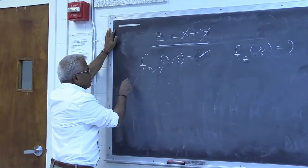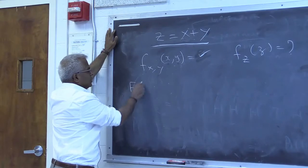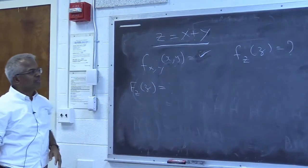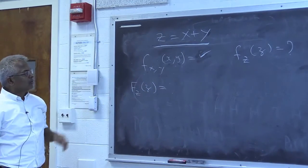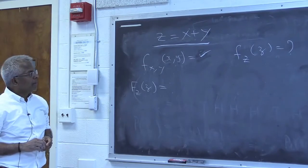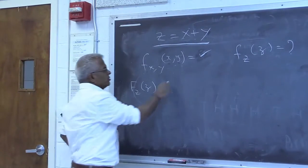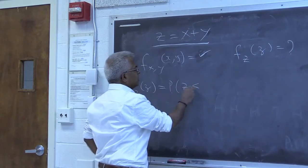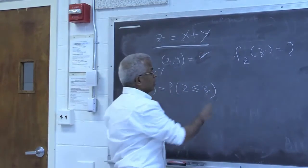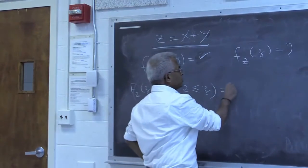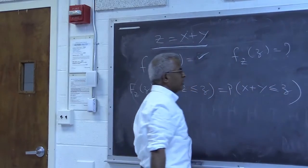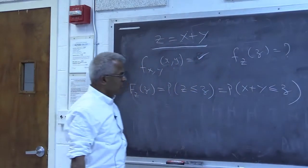To start with, it is generally more natural to begin with the distribution function of Z. The distribution function is by definition the probability that Z ≤ z. But capital Z is given to be X + Y, so this becomes X + Y ≤ z.